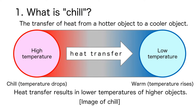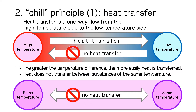To chill is to transfer heat from an object with a higher temperature to an object with a lower temperature. Heat is transferred to lower the temperature of the object on the hot side — this is to chill it. Heat transfer is one-way traffic from the high temperature side to the low temperature side; there is no heat transfer from the low temperature side to the high temperature side.